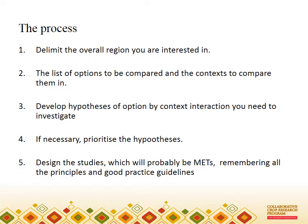The process outlined in the simple example can be used more generally. It goes through the steps of: first, defining the whole study region — you need to know where you want results to apply before you can start selecting sites; secondly, listing the options to be compared, which will become treatments in an experiment, and listing the contexts in which they will be compared; third, developing hypotheses of option-by-context interactions that you want to investigate and understand, based on scientific and local knowledge; fourth, prioritising the most important hypotheses since you will probably have too many to study; and fifthly, designing the studies — probably multi-environment trials — to test those hypotheses.